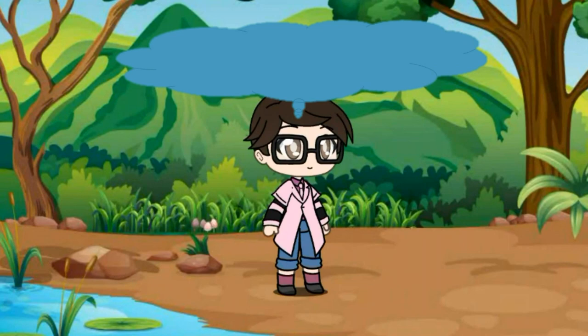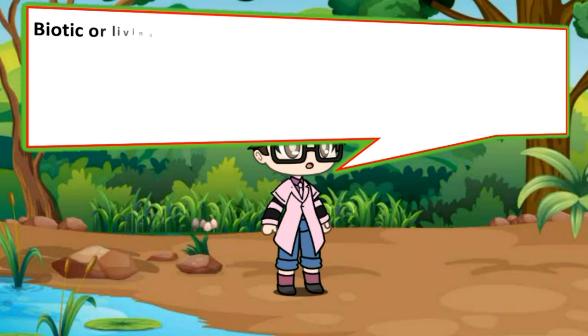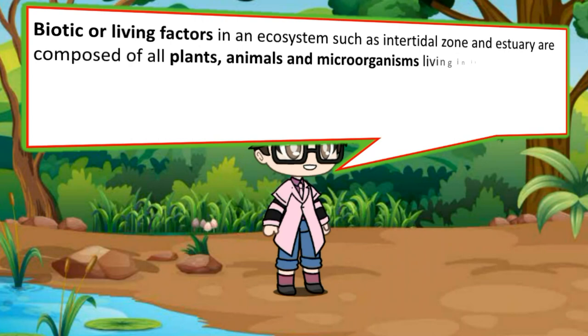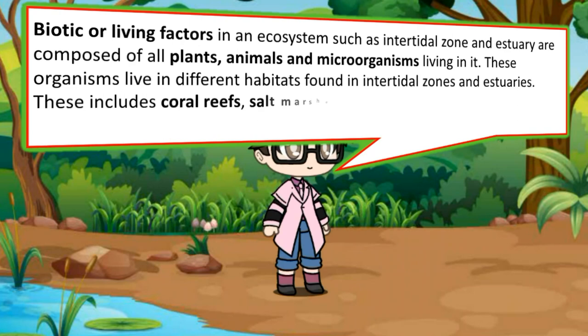What are the biotic factors, or living factors, in intertidal zones and estuaries? Biotic or living factors in an ecosystem such as intertidal zones and estuaries are composed of all plants, animals, and microorganisms living in it. These organisms live in different habitats found in intertidal zones and estuaries, including coral reefs, salt marshes, mudflats, rocky shores, and mangrove forests.